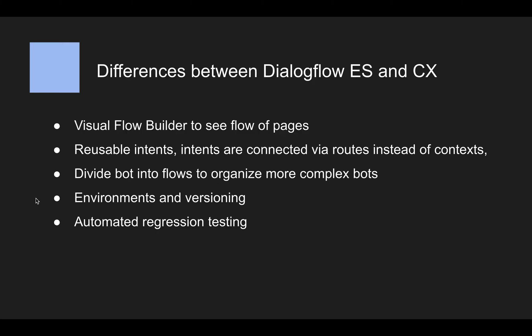Another thing that helps manage complexity and ensure what you put out works is regression testing, which was missing in Dialogflow ES. In ES, once you got to 10, 20 or 30 intents, the way they worked together became increasingly complex. If you made changes, you had no way of knowing if the earlier parts of the conversation still worked — I always had to manually test all the flows. Because it's manual work with humans involved, mistakes are more likely. Now you can automate your testing and make sure nothing breaks as you extend your chatbot, which is really great.